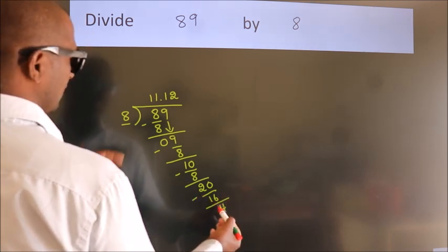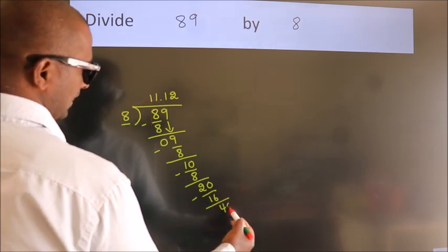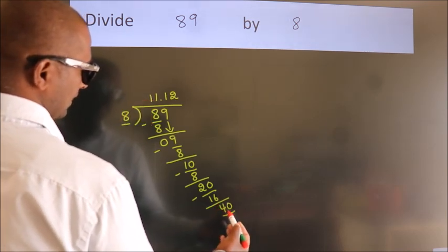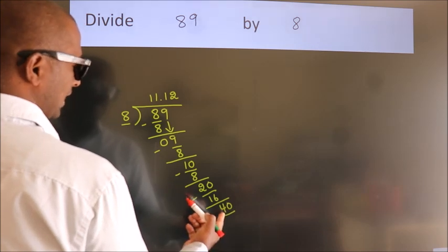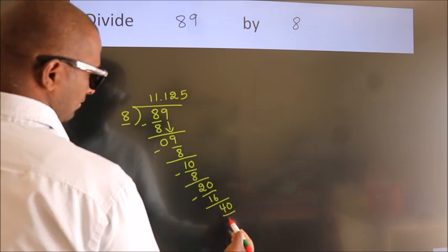After this, we already have the decimal. So directly take 0. So 40. When do we get 40 in 8 table? 8 fives, 40.